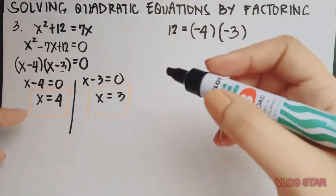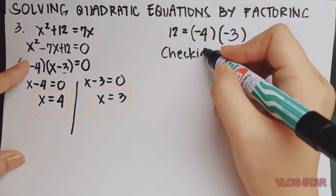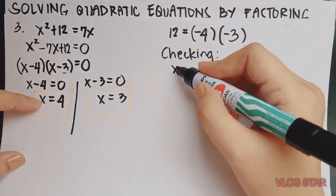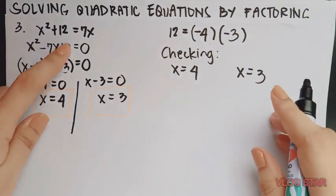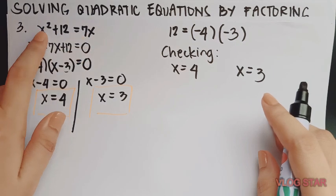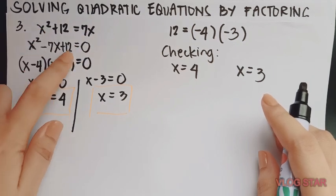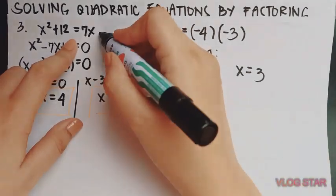Let's have the checking. Let us check if x equals 4 and x equals 3 are the solutions for this equation. We may actually use this equation or this one. Either of the two is correct. Let's try this one.